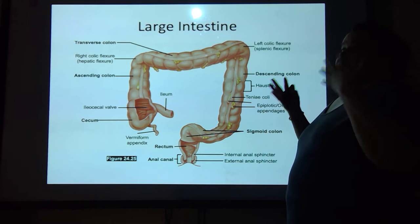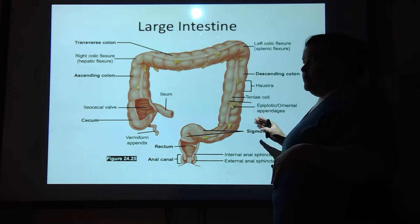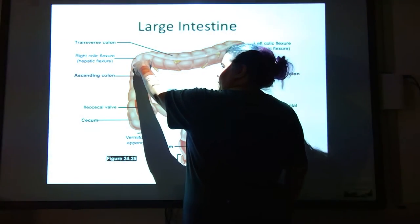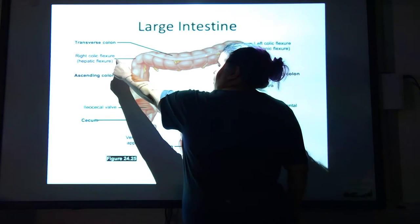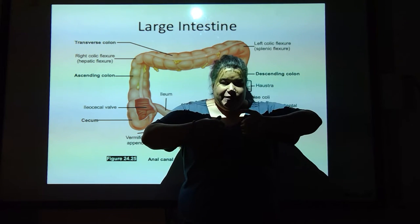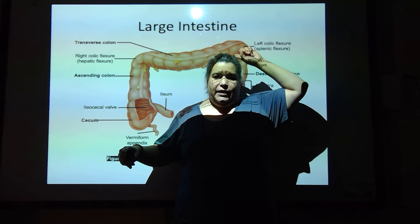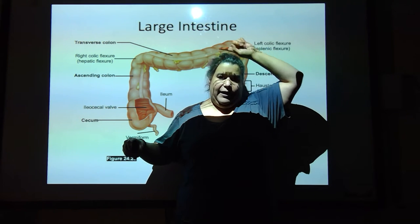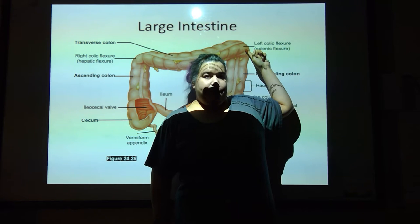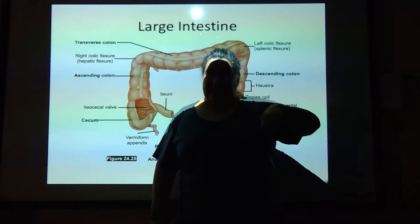If you follow the direction of the fecal material, those directions make sense. As we come up, see how it's bent right here? This is called the right colic flexure. Every organ that we're looking at, it would be as if it's in us — so this would be the right-hand side. As this comes across, going that direction, this transverse colon bends again. This is the left colic flexure — this is my left hand.